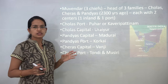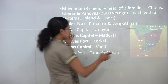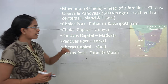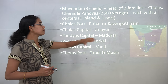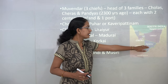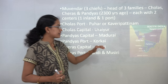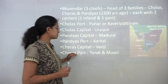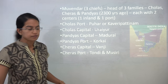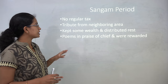They ruled around 2300 years ago. The Cholas had the port city of Kaveripatnam and their initial capital was Uraiyur. The Pandyas had their capital at Madurai and the major port city of Korkai. The Cheras had their capital at Vanji, with two major ports: Thondi and Musiri.